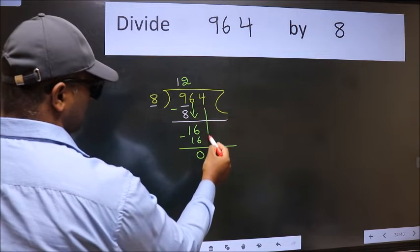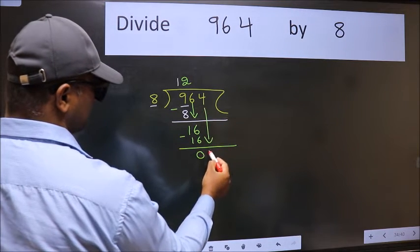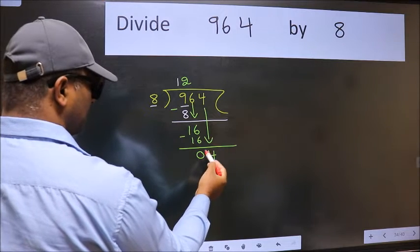After this, bring down the beside number. So 4 down. After this step, the mistake happens.